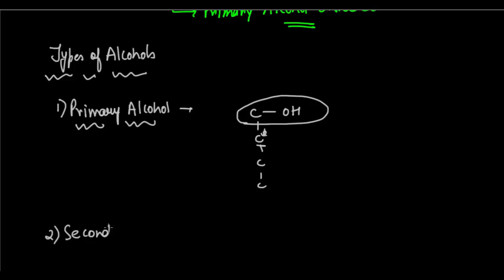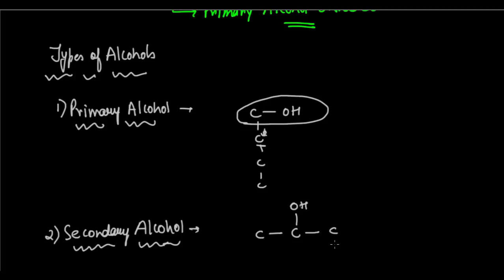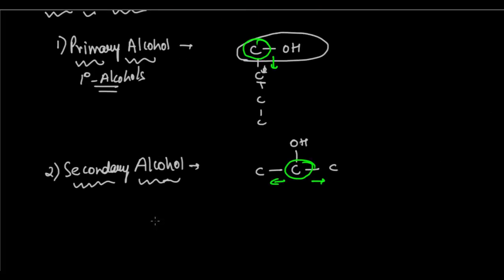A secondary alcohol — you can pretty much guess — is one where the carbon attached to the functional group is attached to two other carbon atoms. Primary alcohols are also called first degree alcohols, and secondary alcohols are also called second degree alcohols.